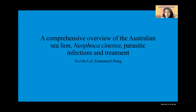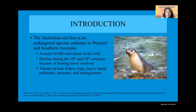So you might ask: what is the Australian sea lion? The Australian sea lion is an endangered species of pinniped endemic to Western and Southern Australia. It is actually the only species of pinniped that is native to Australia.